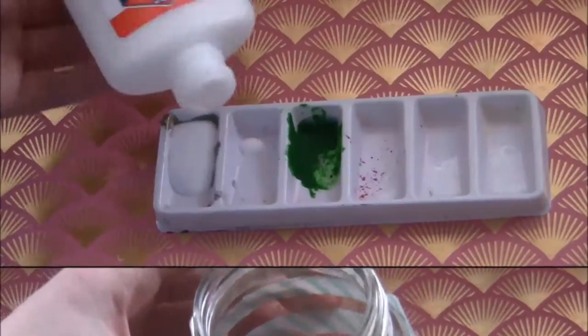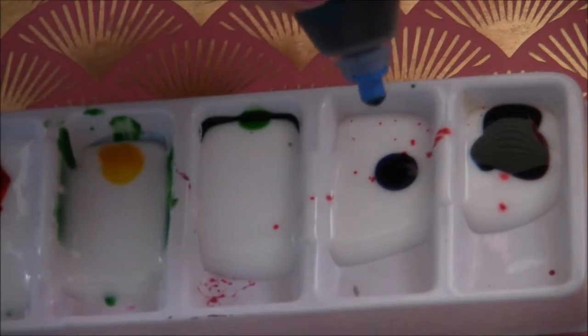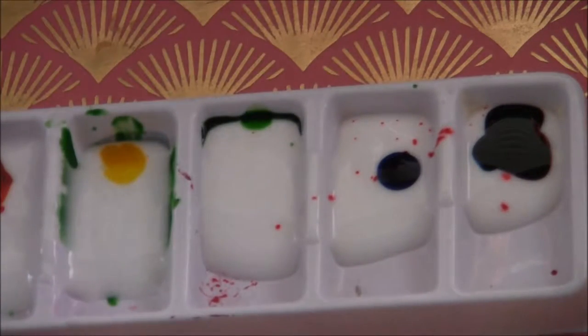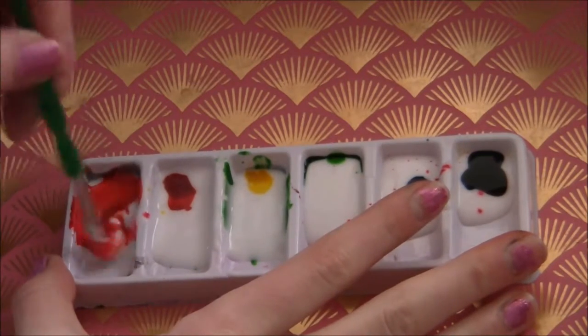First, take your tape and I'm just going to wrap that around the jar. Taking my white glue, I'm just going to fill all the little sections in my palette. And just add some food coloring to color that and mix it all together.